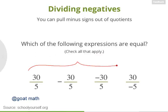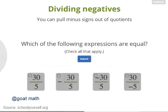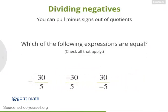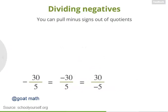Which three of these expressions down here are equal to each other? These three expressions are all equal. It doesn't matter if the minus sign is in front of the quotient, in the first number, or in the second number. These all equal negative 6.